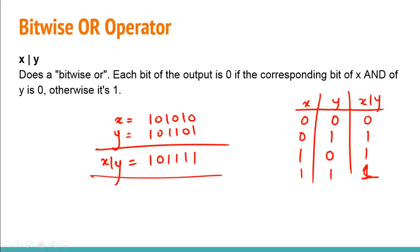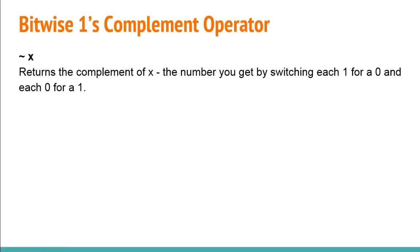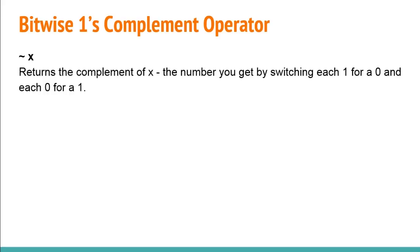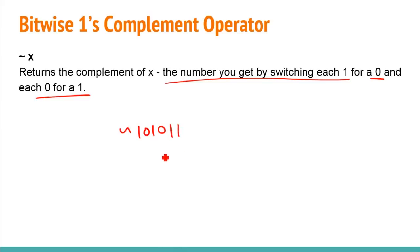Next we have the ones complement operator. We've already seen how to calculate it, but quickly: in an exam you simply replace each one with zero and each zero with one. The symbol is the tilde (~). So for a given binary value like 101011, the ones complement would be 010100.